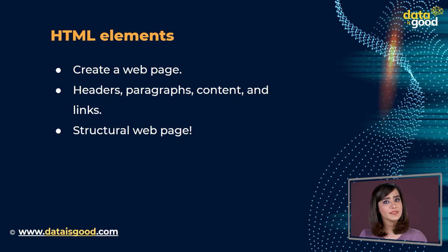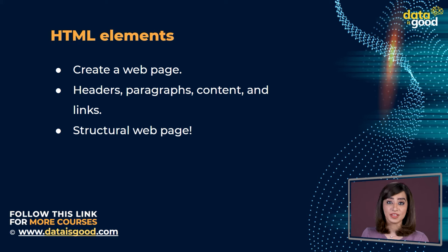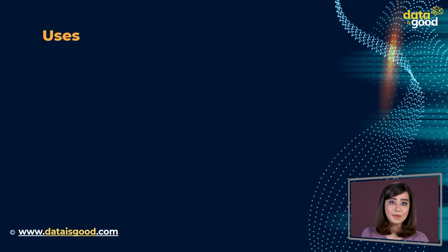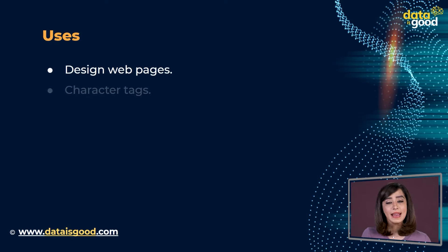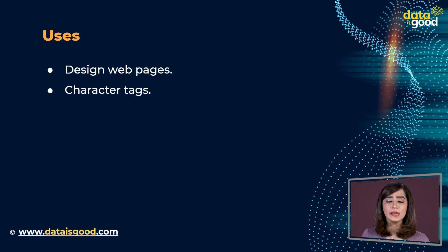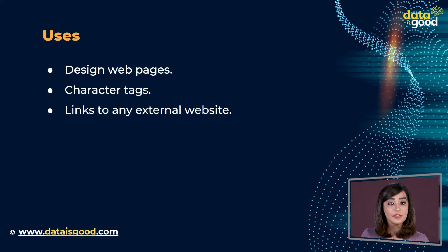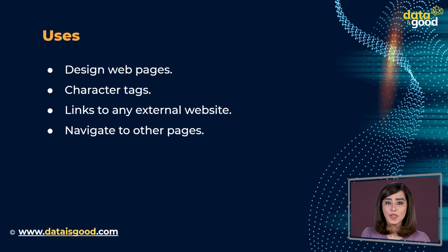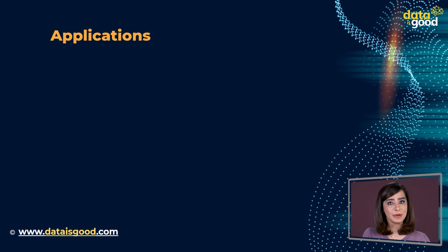HTML is a very important subject. Now let's learn about some of HTML's special uses so that we know how to use HTML in the real world. HTML helps us design web pages. Character tags are used for production in web portals, and this is possible only because of HTML. With the help of HTML we can also add links to any external website on any web page, so that users can easily navigate to other pages.